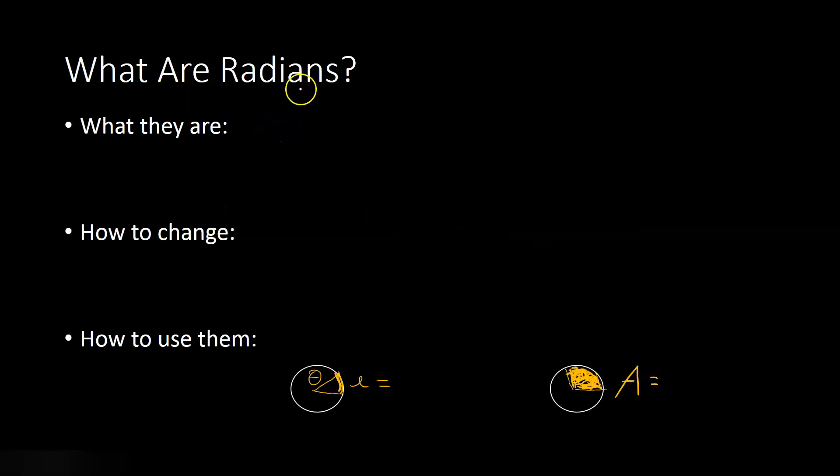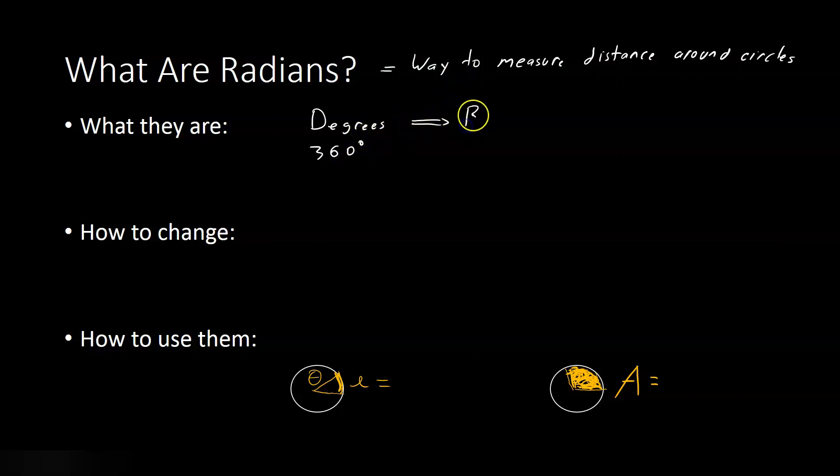So our first question is, what really are radians? Well, radians are just a way to measure the distance around a circle. Now what you might be used to is degrees. That also measures the same thing. We say there are 360 degrees in a circle. Now we can also measure that angle using radians. It's just another unit of measure.